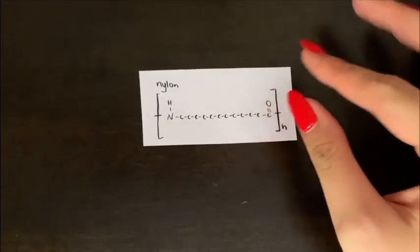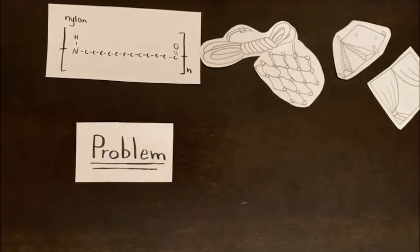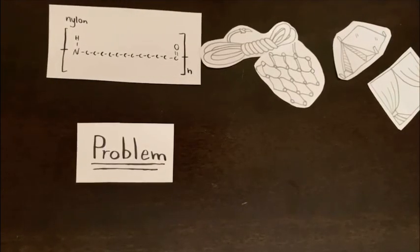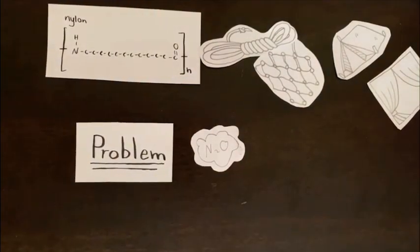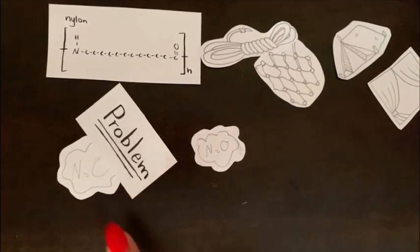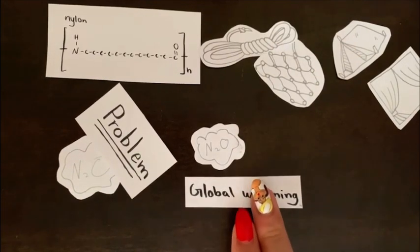The next plastic is nylon. This plastic is used to make ropes, fishing nets, tents, and curtains. Nylon is a significant problem because the greenhouse gases that are produced by nylon creates nitric oxide, a greenhouse gas that is 300 times more potent than carbon dioxide, which contributes to global warming.